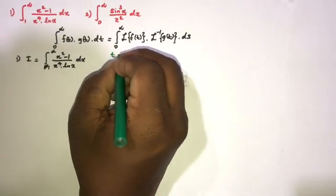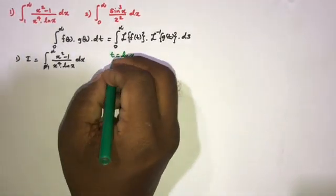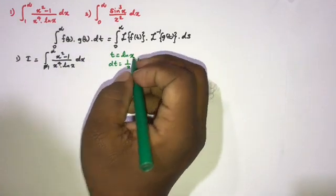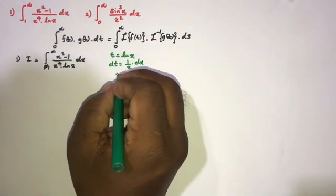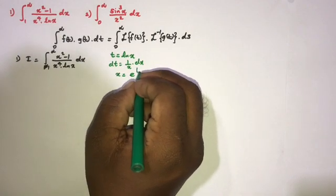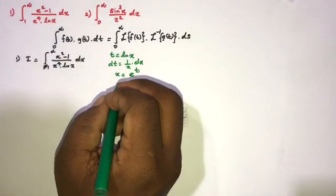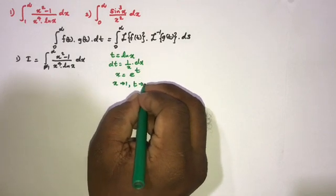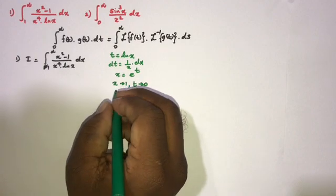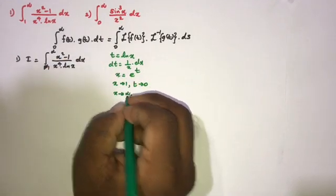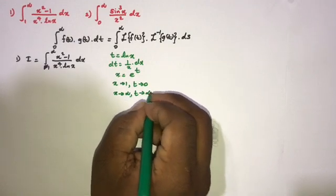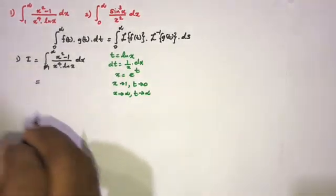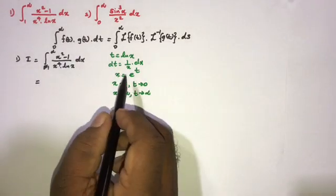Let t = ln(x). Then dt = (1/x) dx, and we can isolate x = e^t. The lower limit: as x → 1, t → 0; the upper limit: as x → ∞, t → ∞. Now we can substitute back into the integral.